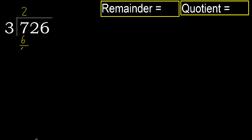Ok. Subtract. Next: 12. 3 multiplied by 5 is 15 — 15 is greater. 3 multiplied by 4 is 12 — it is not greater.